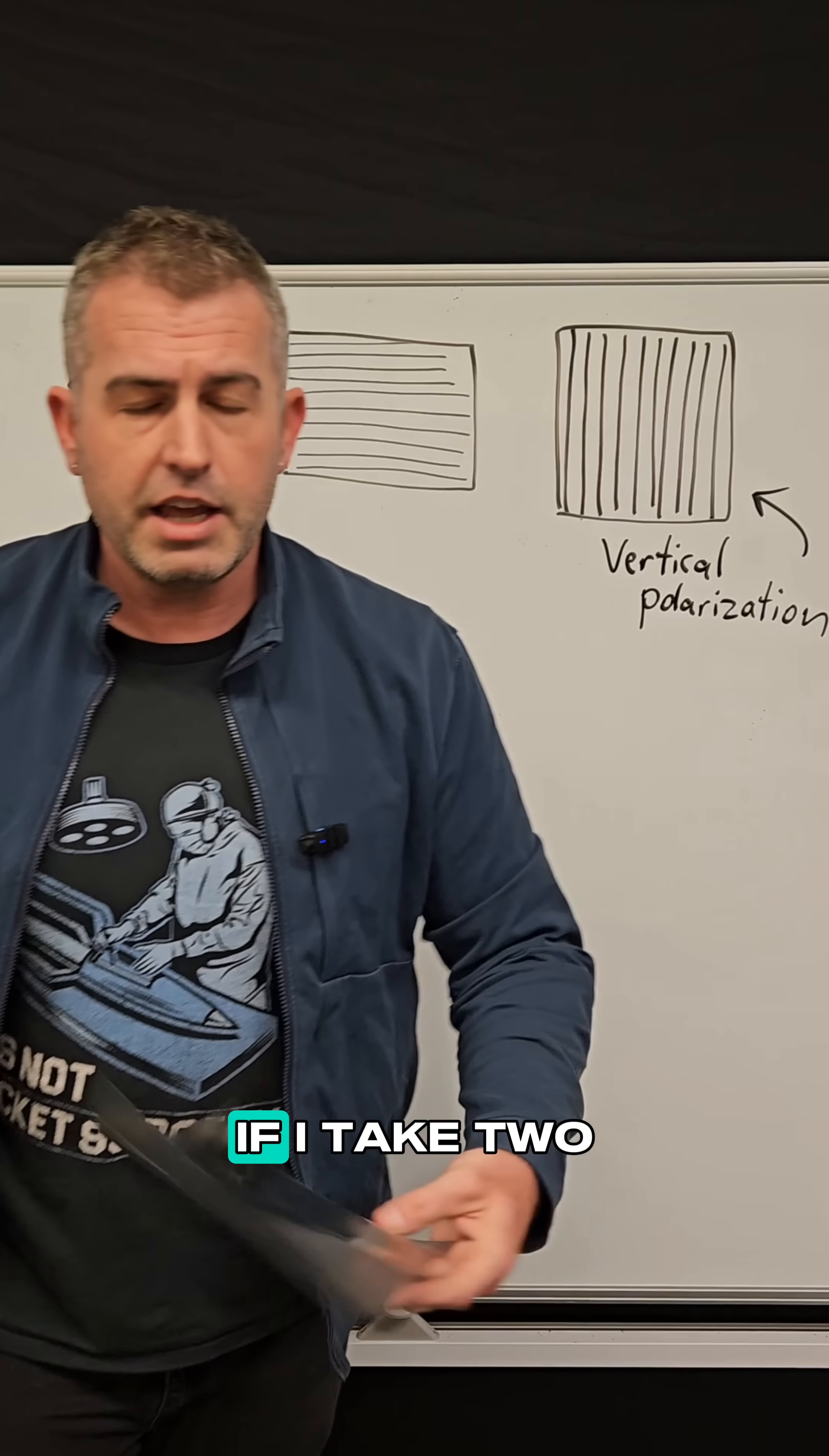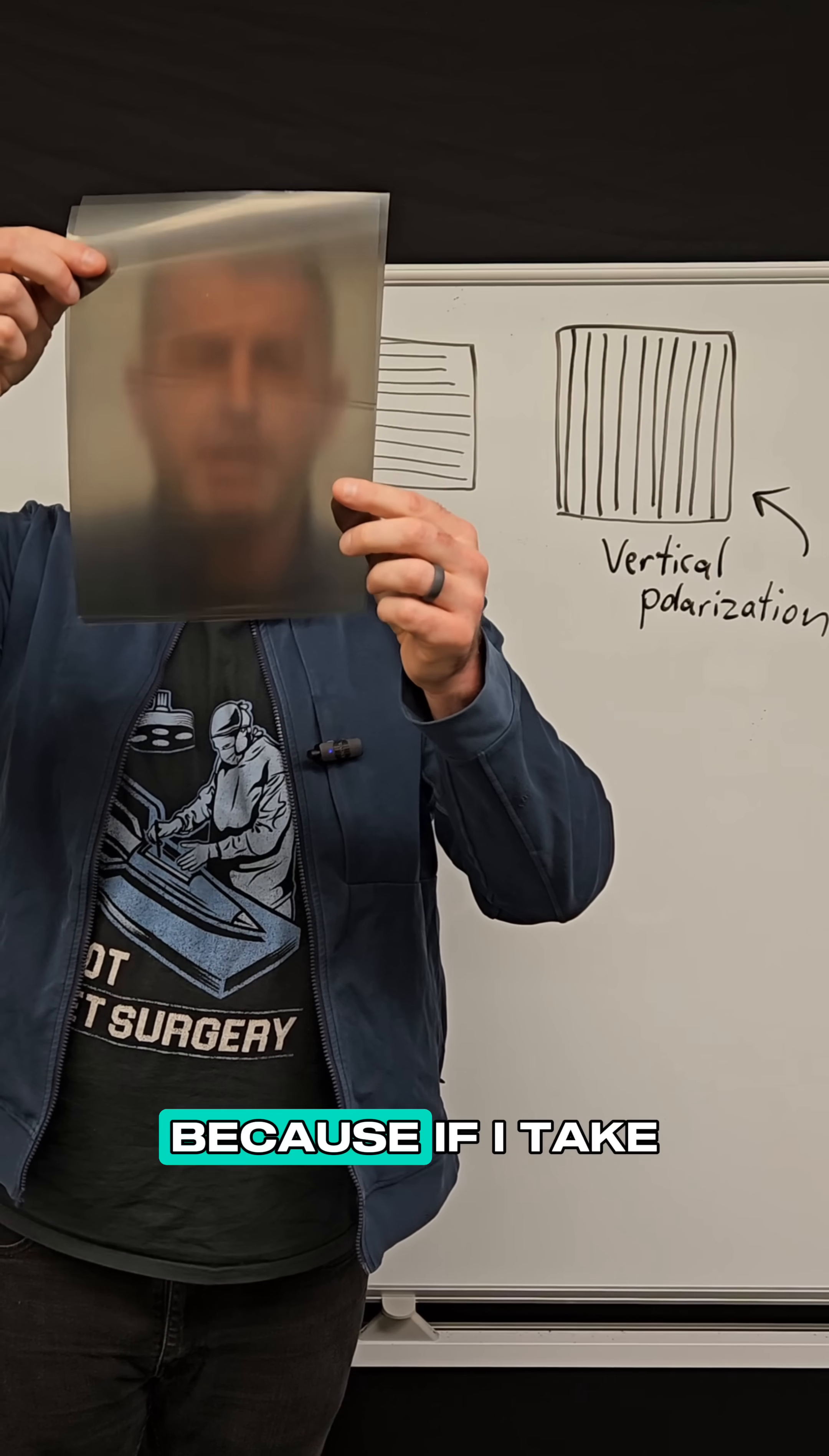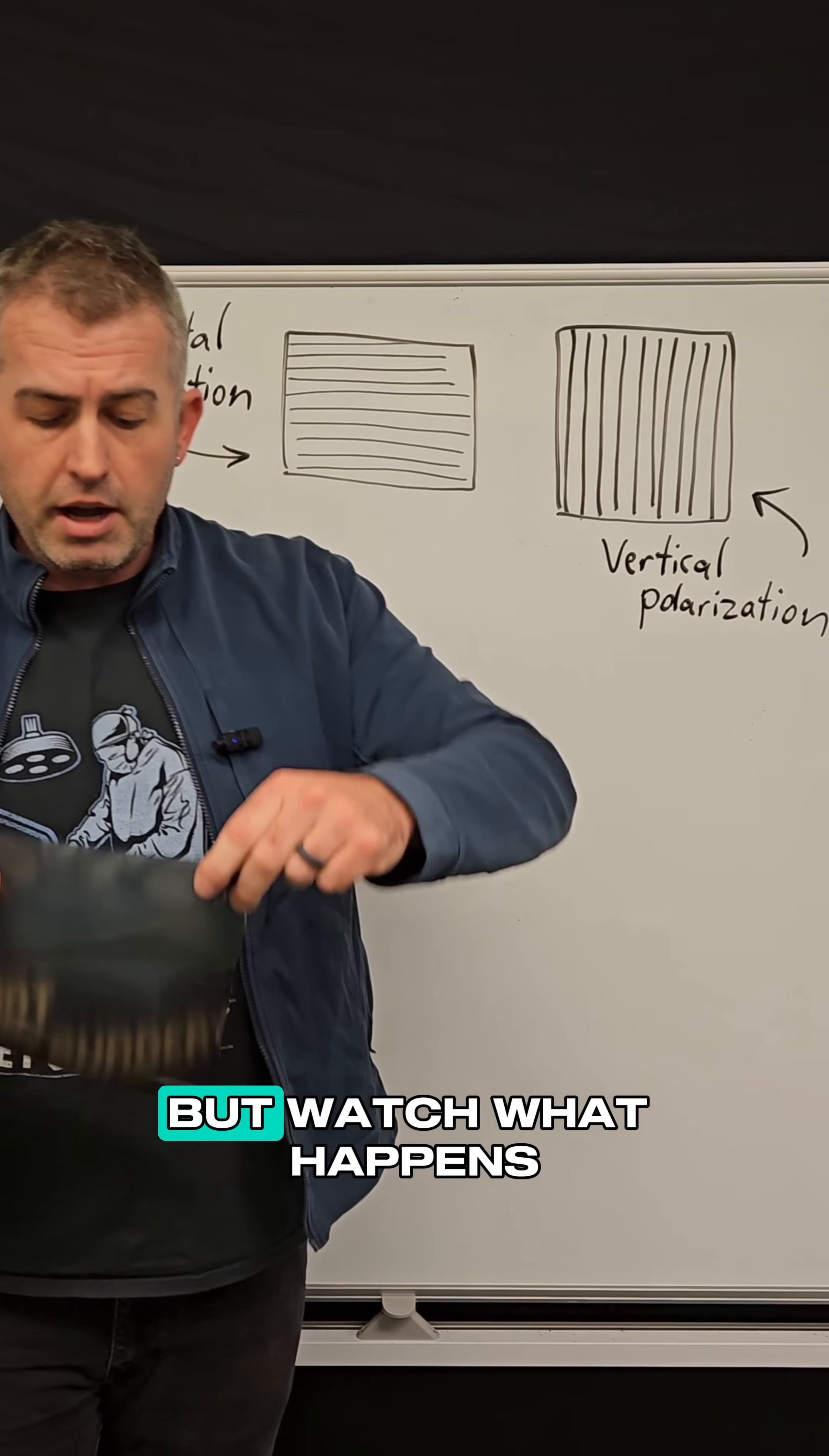But now here's where it gets interesting. If I take two of these filters and I hold them over each other, notice that there isn't really any difference between having one or having two. If I take two that are oriented the same way and I just stack them, it's still allowing 50% of the light to get through.